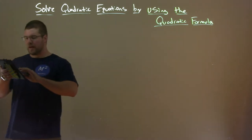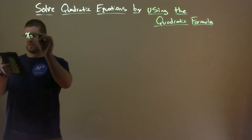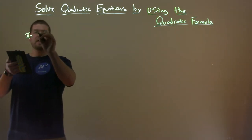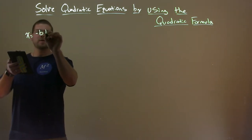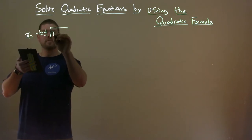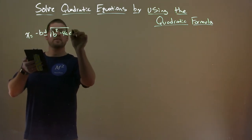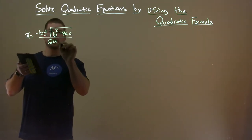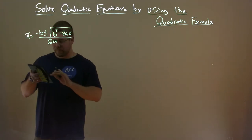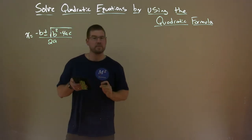So let's go write that out here. x equals negative b plus or minus the square root of b squared minus 4ac, all over 2a. Don't forget that part — this is something you should really memorize.